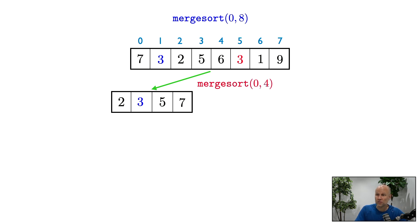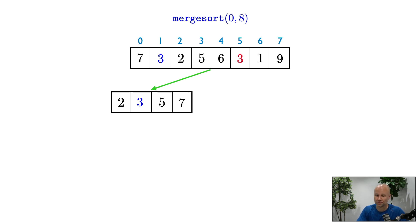We're going to merge the vector on the left, [3, 7], and the vector on the right, [2, 5]. After the merge everything is in the right order so we have the vector [2, 3, 5, 7]. The call to merge sort(0, 4) is now finished and we return back to the top-level call of merge sort(0, 8).